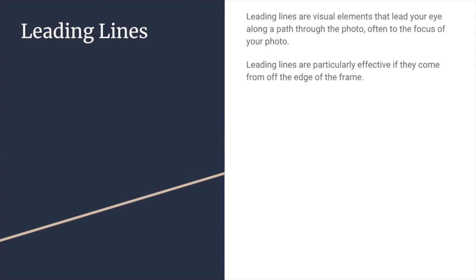The first composition principle that I mentioned in the last video that we're going to talk about today is called leading lines. Leading lines — though I think we mentioned these in class last week — are simply the natural visual elements of the surrounding area in your photograph that, as we're going to look at several examples of, lead or point to the area of focus in your photo.